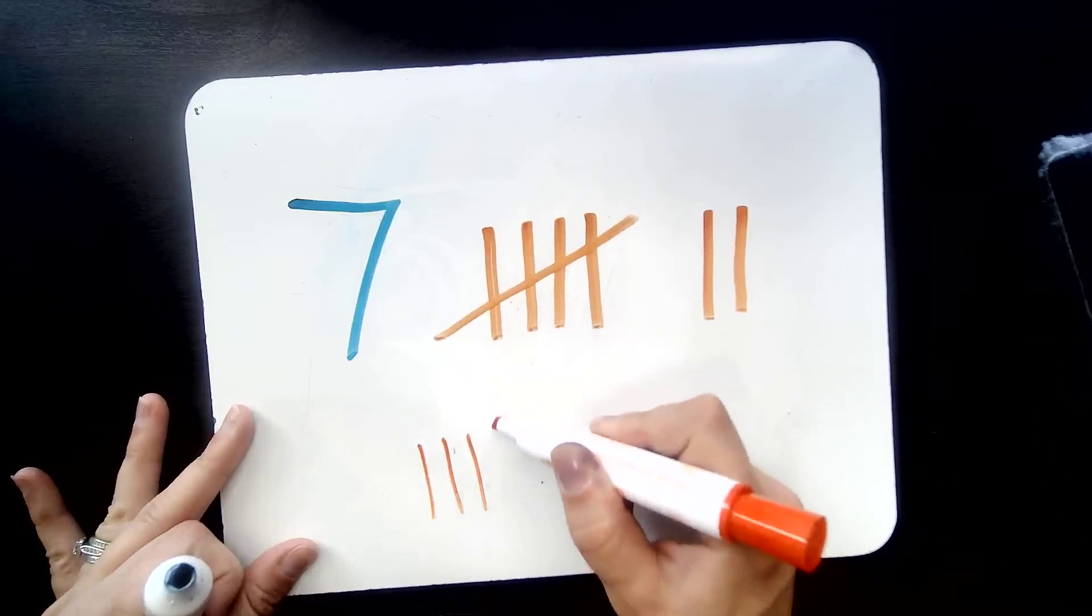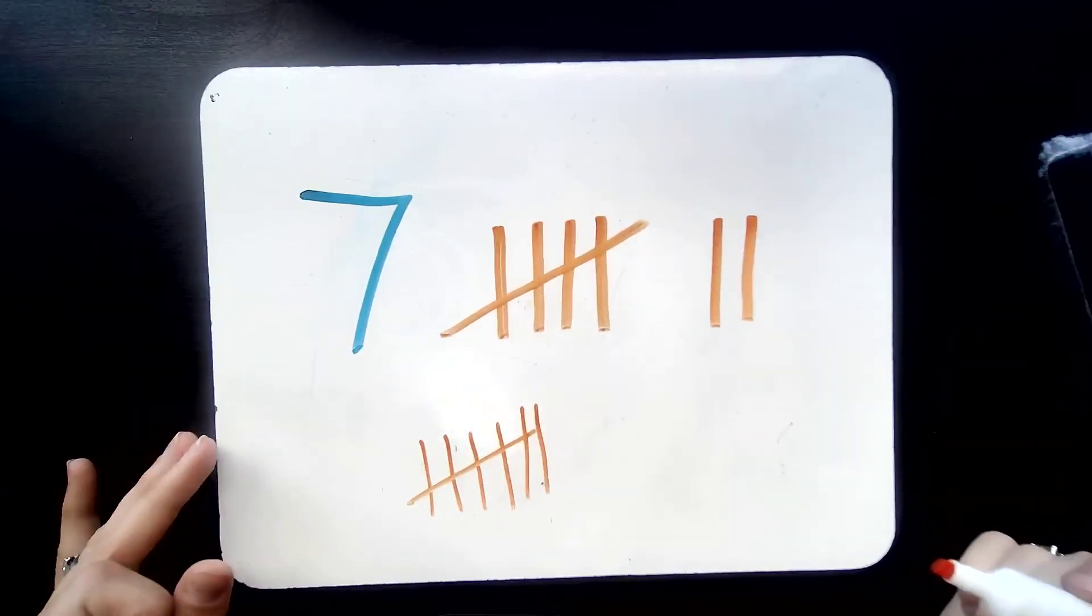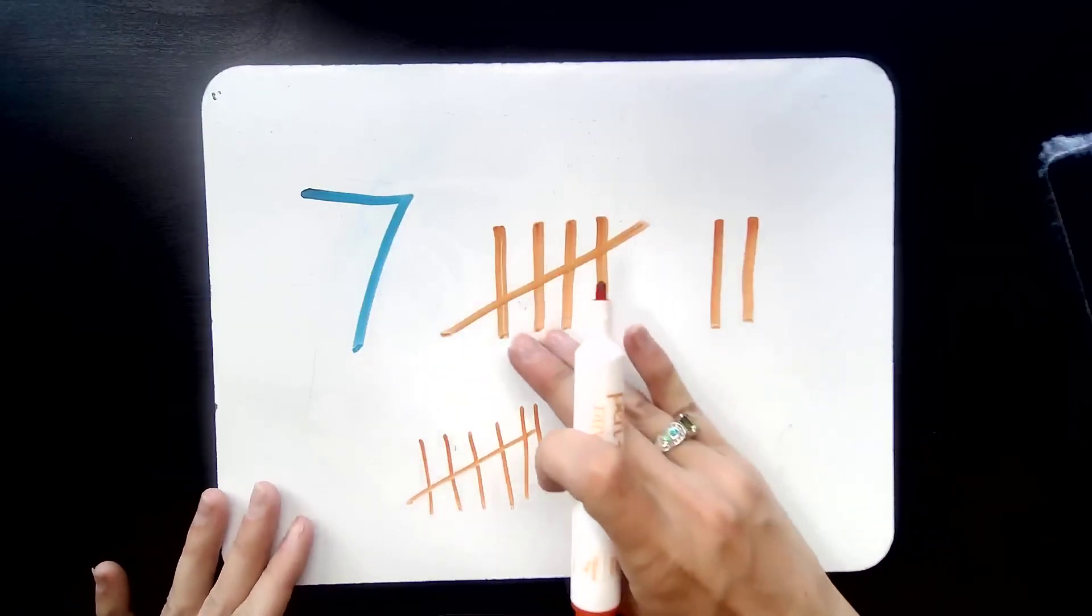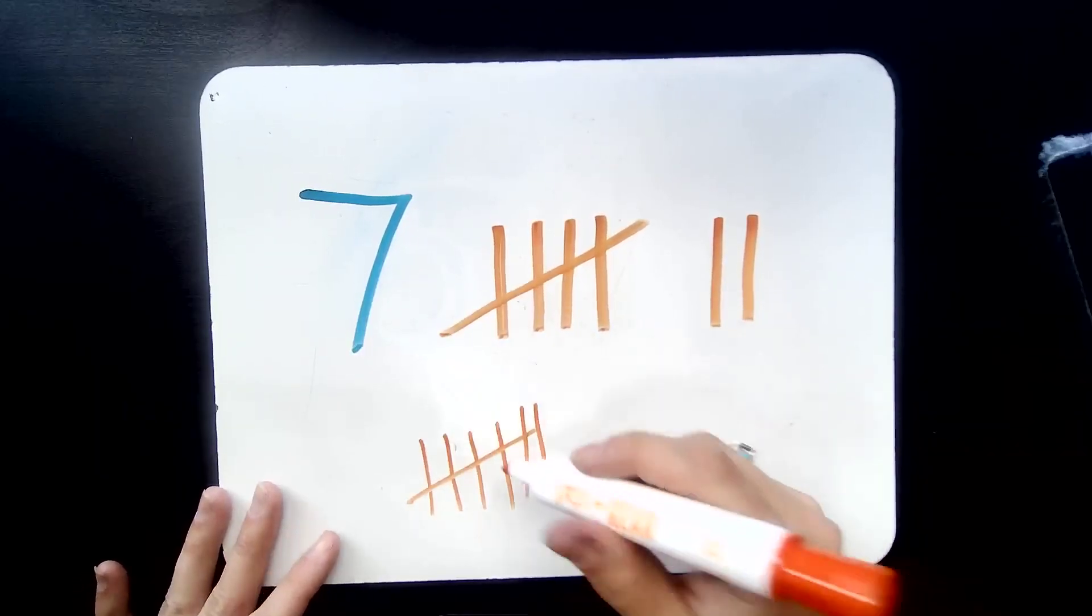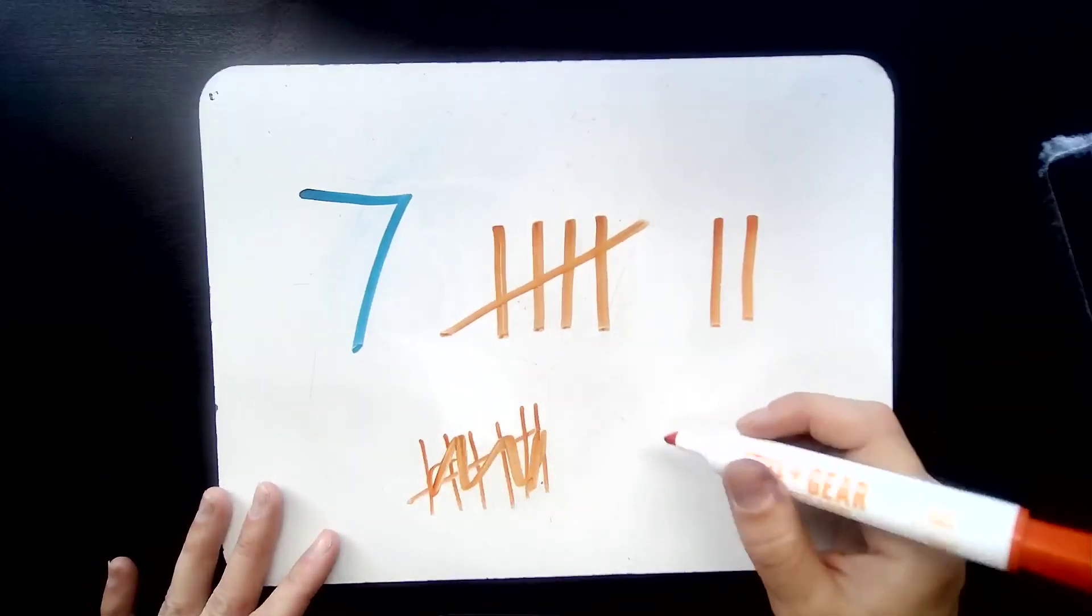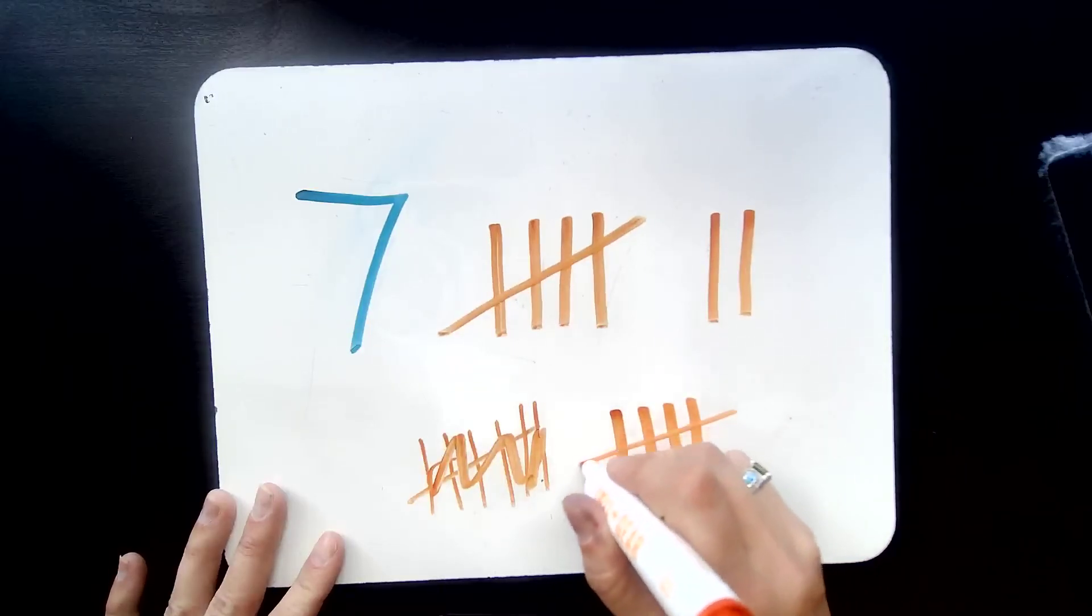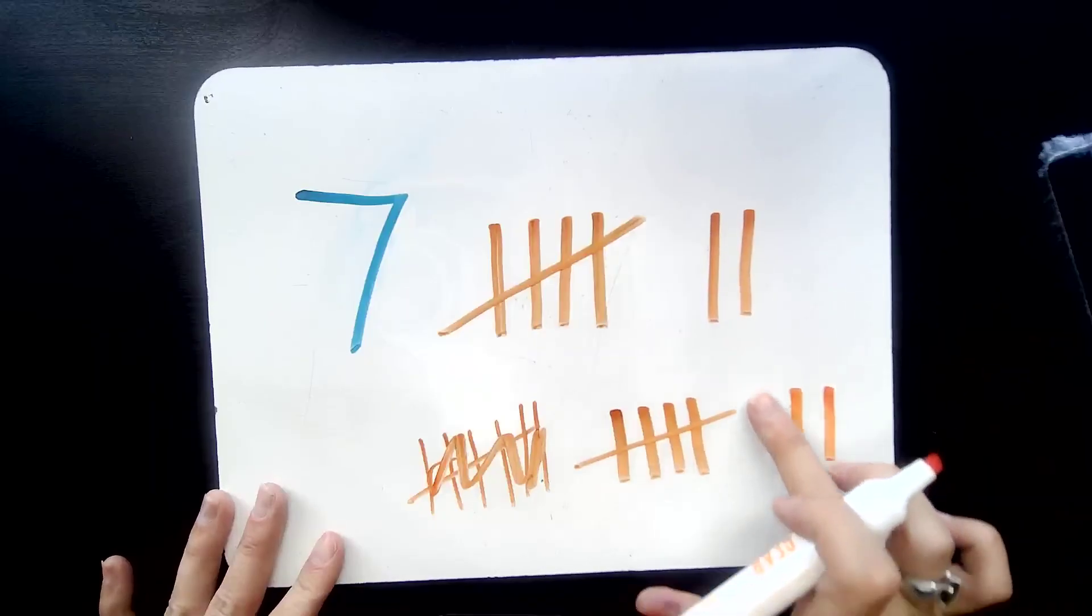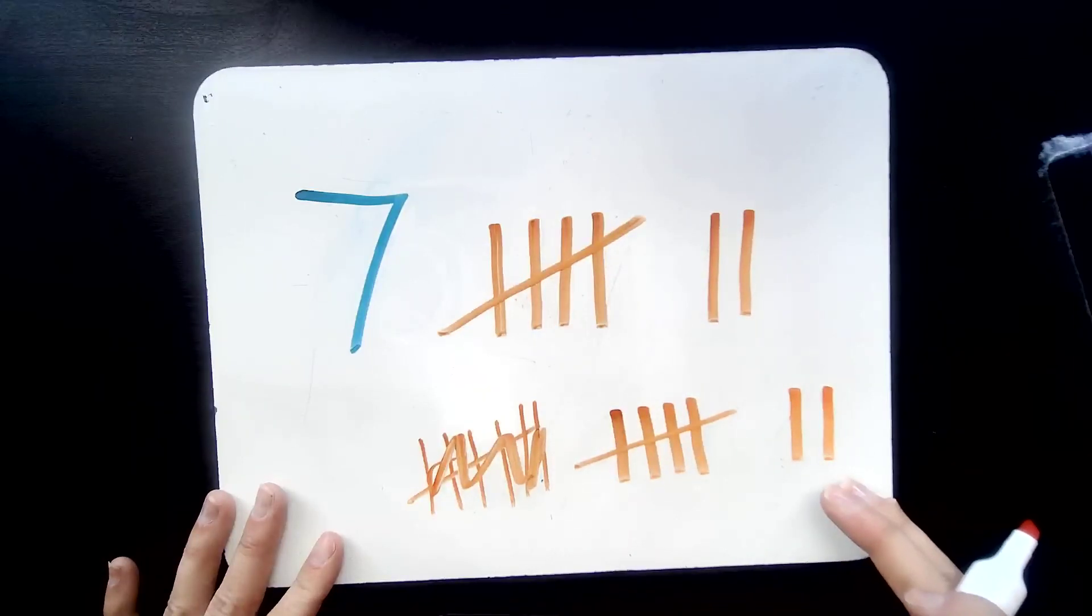When you do your group of five, don't put your tallies right next to it for seven. That's a little confusing. I can't tell that this is five, six, seven because they're all kind of too close together and attached. Make sure when you do it, you have a little space like this. You want that space in between to show that there are different groups.